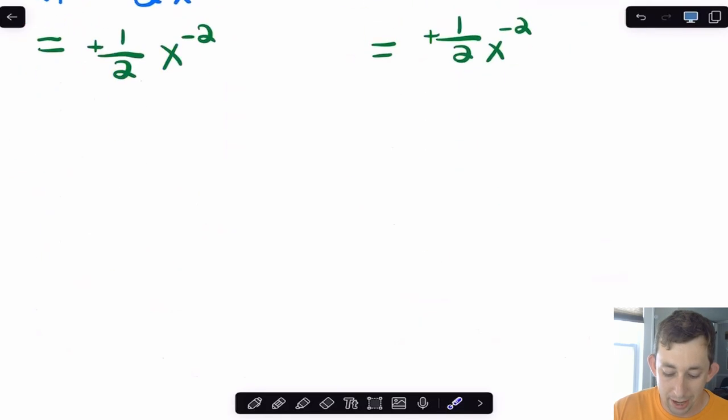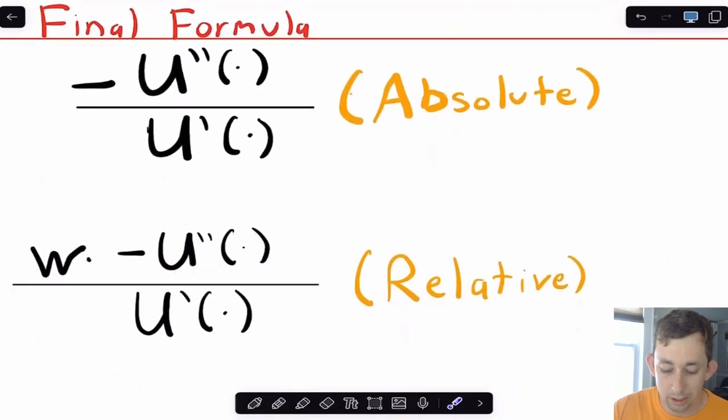So that's why for the Arrow-Pratt measure of risk aversion, what we're gonna do is we are going to take the second derivative, multiply it by minus one, again, because it's concave, so U double prime tends to be negative or will be negative. We're gonna divide it by the first derivative of the utility function, and that's gonna be our measure of risk aversion. It's what we're gonna call our absolute measure of risk aversion.